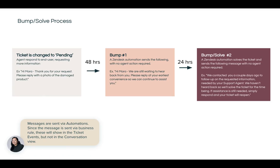No agent action is required. Then another time frame passes — let's say 24 hours — and the bump-solve will occur, again via automations and triggers within Zendesk. The message sent is: 'We contacted you a couple days ago to follow up on the requested information needed by your support agent. We haven't heard back, so we'll solve the ticket for the time being. If assistance is still needed, simply respond and your ticket will reopen.' The automation then solves the ticket with no action required by the agent.